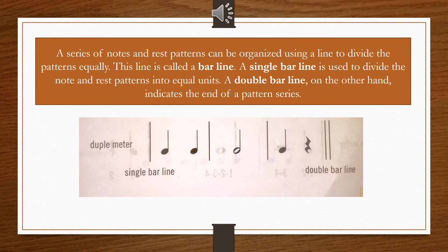A series of notes and rest patterns can be organized using a line to divide the patterns equally. This line is called a bar line. A single bar line is used to divide the note and rest patterns into equal units.